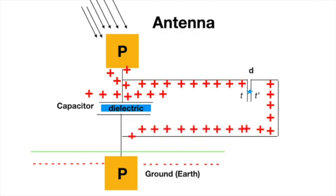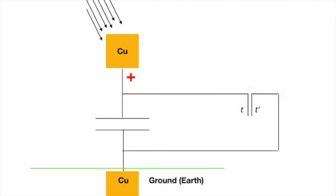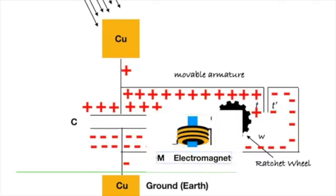The spark gap should be adjustable. We can utilize this current flowing to ground by placing an electromagnet in series, indicated by the letter M.